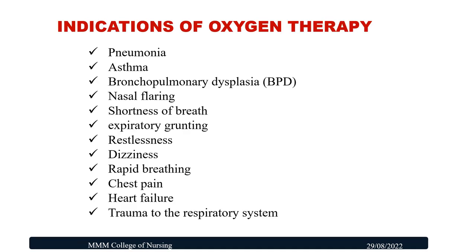Indications of Oxygen Therapy — to whom Oxygen is necessary and to be administered: a child with Pneumonia and Asthma, Bronchopulmonary Dysplasia, nasal flaring, shortness of breath (dyspnea), respiratory groaning, breathlessness, dizziness and rapid breathing, chest pain, heart failure, and trauma to the respiratory system. All these conditions require Oxygen Therapy.